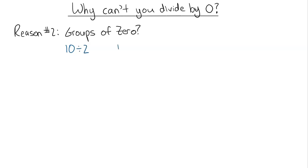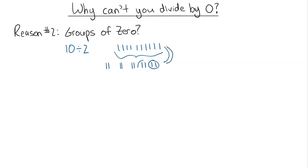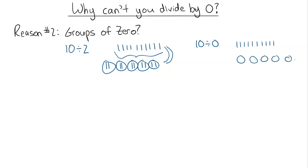The second reason is groups of 0. If you go 10 divided by 2, we have 10 things — say 10 tick marks — and we make those into groups of 2, giving us 5 groups of 2. That's how we get our answer of 5. If we tried to make groups of 0, how would we take 10 tick marks and make them into groups of 0? We'd need an infinite number of groups and we'd still never have anything in any group — we can never get an answer for that.